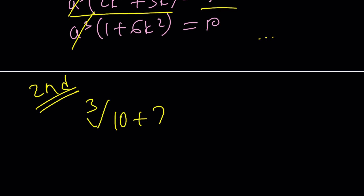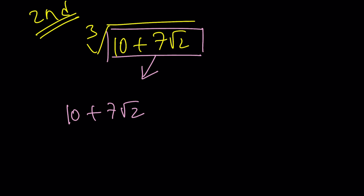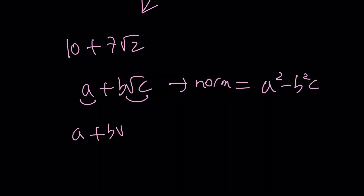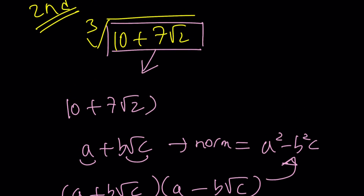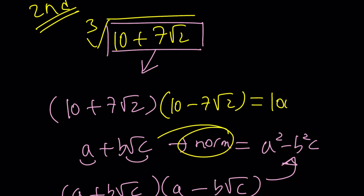The second method is really cool but depends on something we need to check first. Inside the radical we have 10 + 7√2 — we're going to find the norm of this expression. The norm of a + b√c is a² − b²c, obtained by multiplying the expression by its conjugate. So the norm of (10 + 7√2) is 10·(10 − 7√2), giving 100 − 49×2 = 100 − 98 = 2.